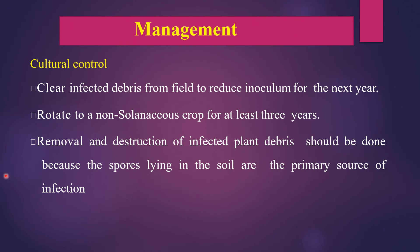Let us see the control measures and management of early blight of tomato — cultural methods and chemical methods. Cultural control: clear infected debris from the field to reduce inoculum for the next year, and rotate to a non-solanaceous crop for at least 3 years. Removal and destruction of infected plant debris is essential, as spores lying in the soil are the primary source of infection.